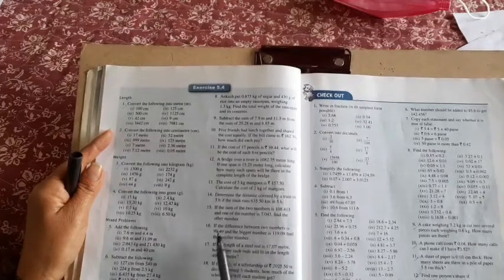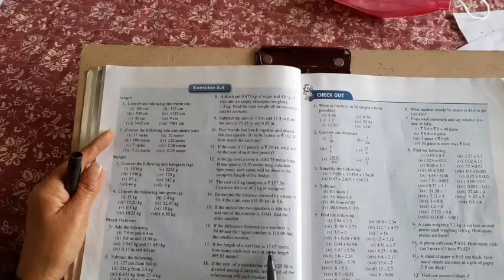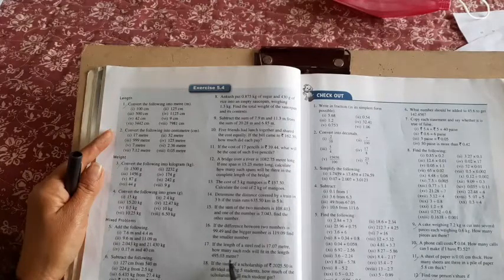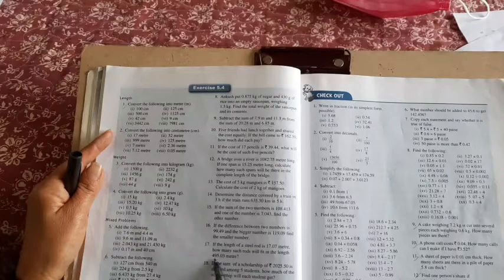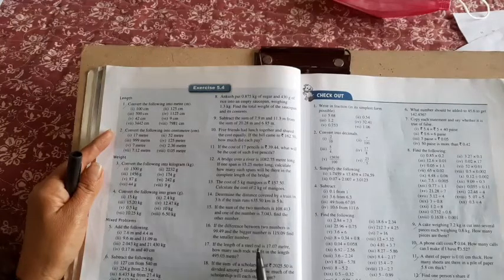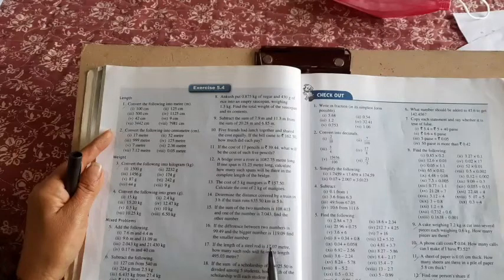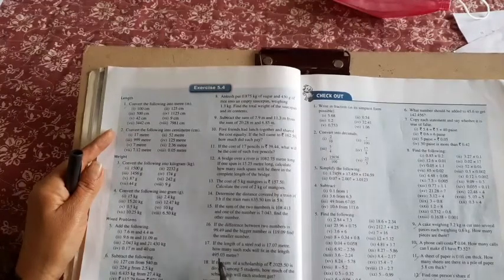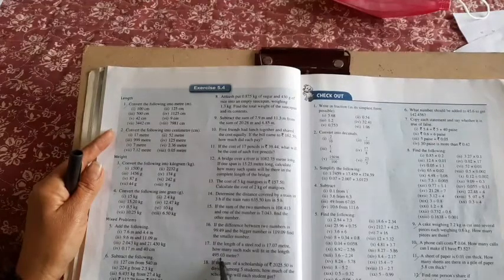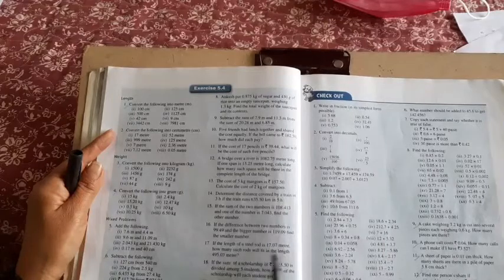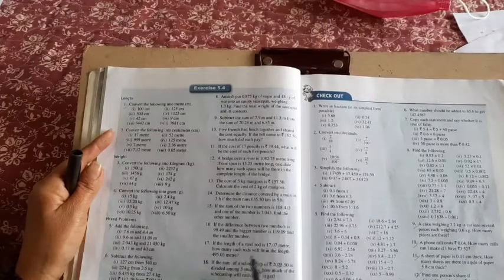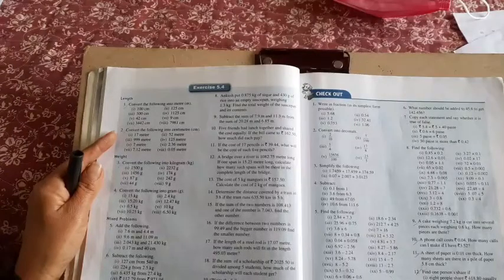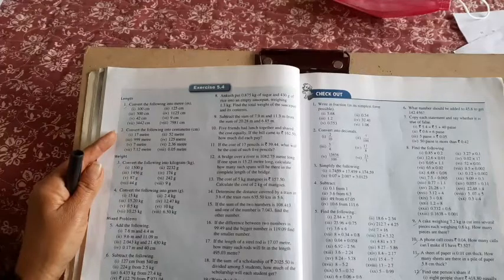Question 17: If the length of a steel rod is 17.07 meters, how many such rods will fit in the length 495.03 meters? To find the number of rods, divide 495.03 by 17.07. Both are in meters, no conversion needed. You are finding the number of rods, so your answer is just a number, not in meters.